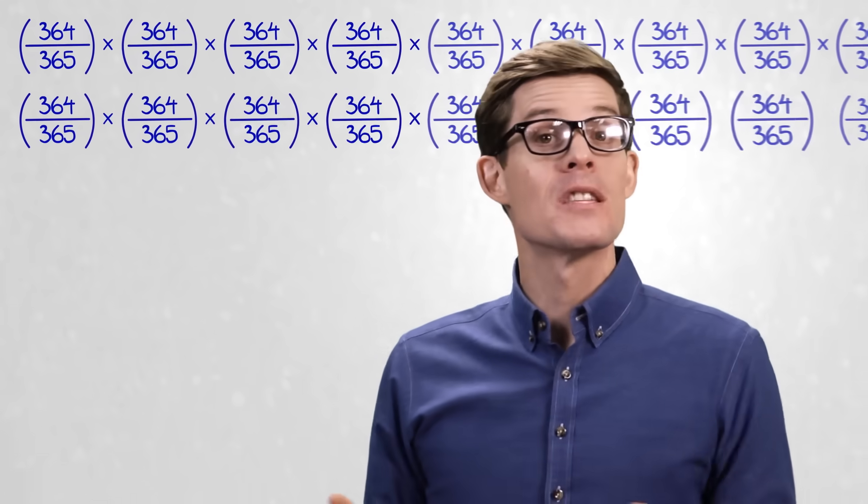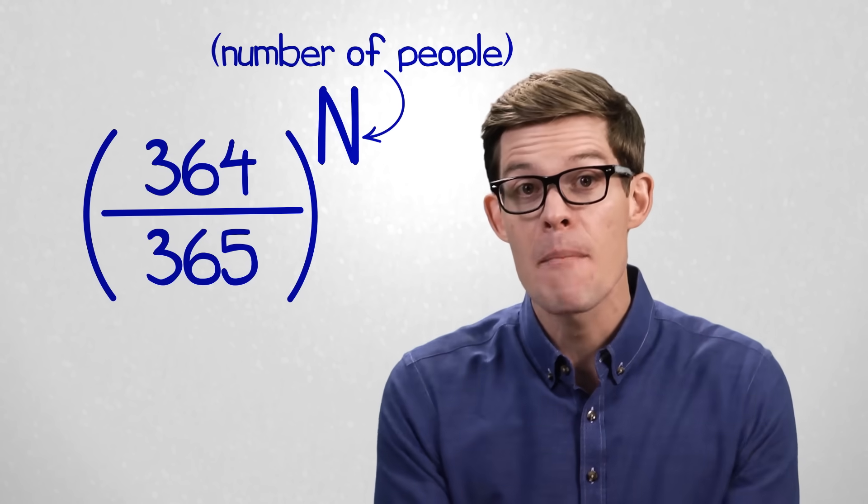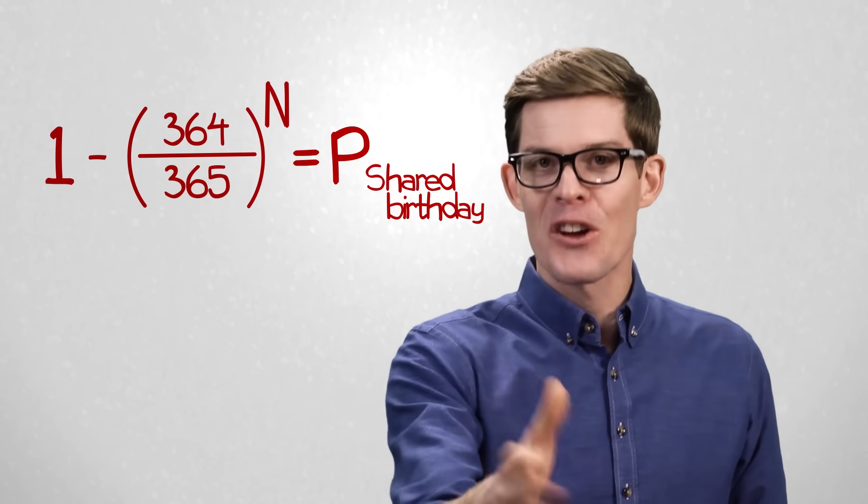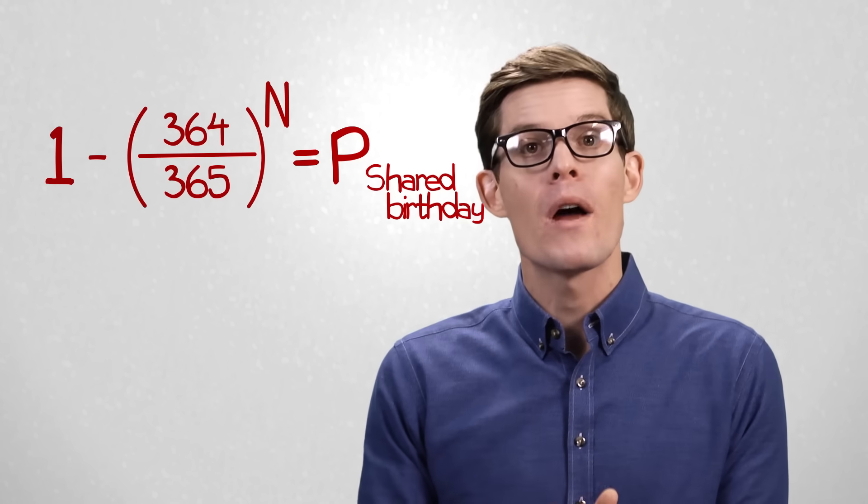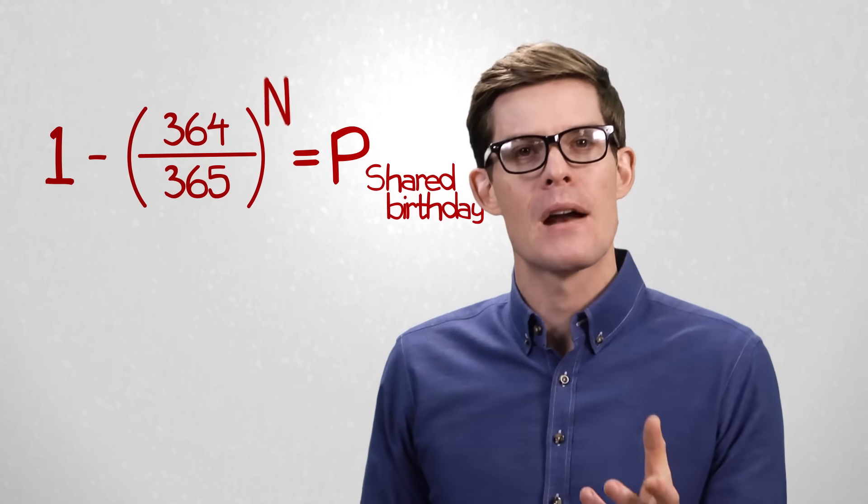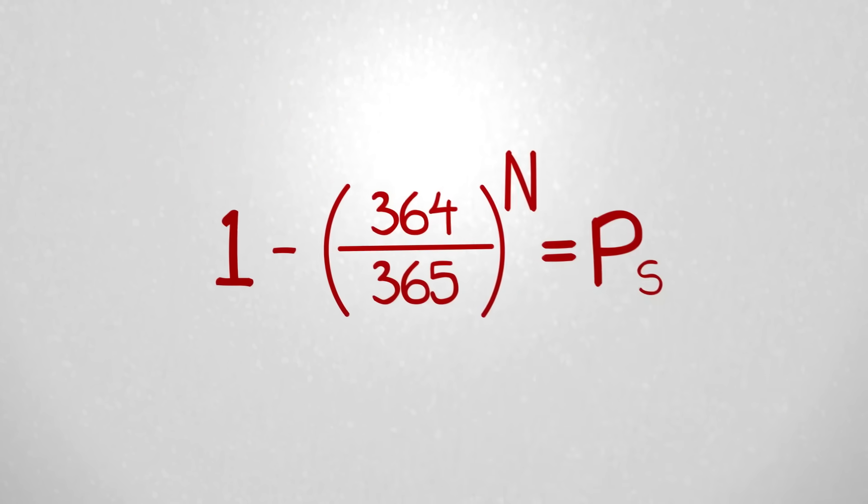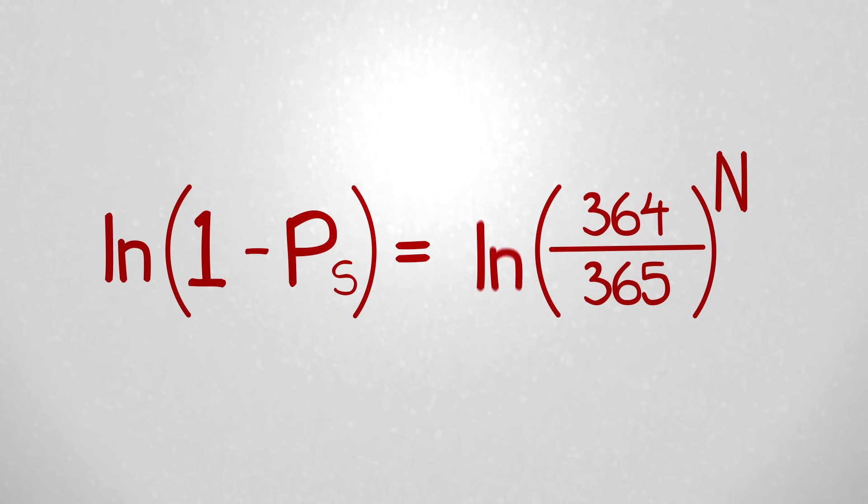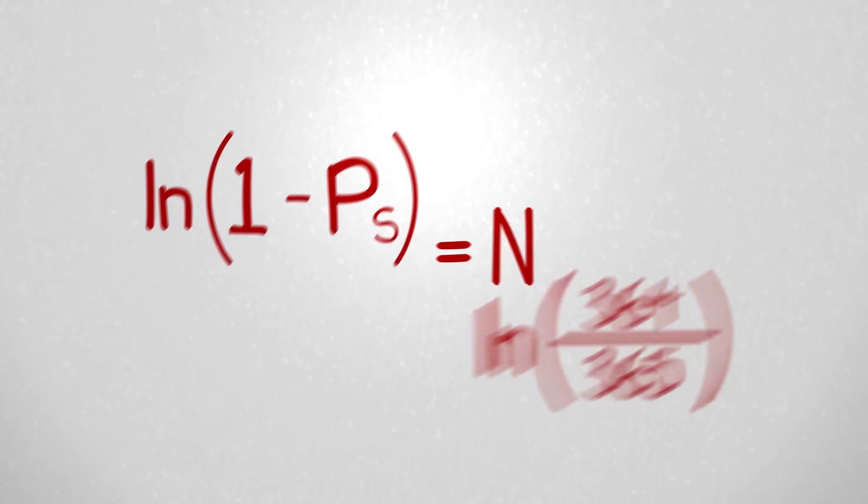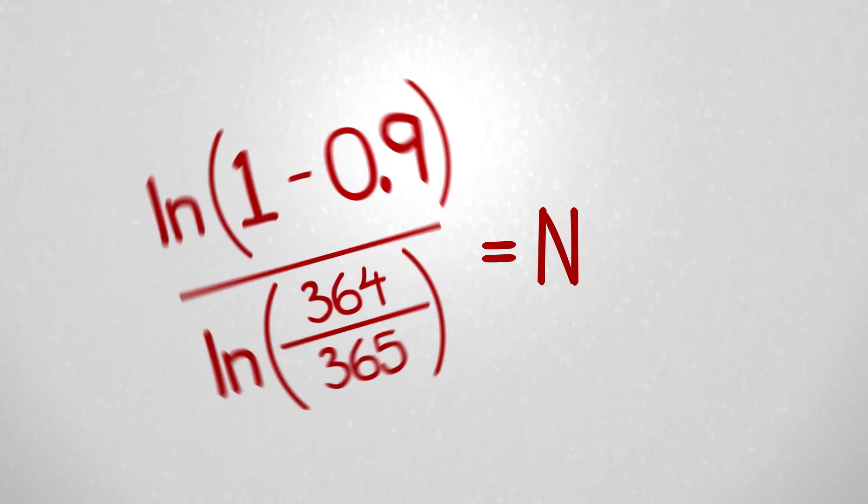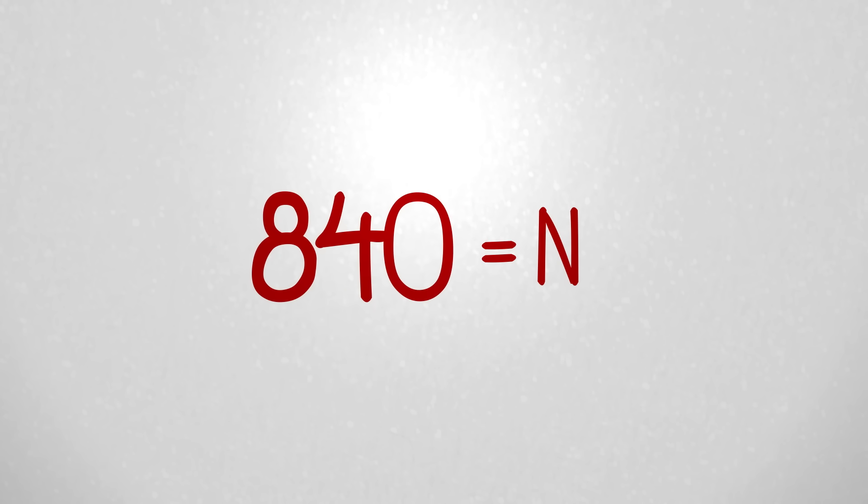In this case, every new person that we add to the room has the same chance of not sharing your birthday. The chances of not sharing combine and combine with every new person we add to the room. The chances of them having your exact birthday? Ah, you're catching on. Now, we want to figure what that group size is, that number N. So we can do some rearrangement, take the log of both sides. To have a 90% chance of one person having your birthday, you'd need 840 people.